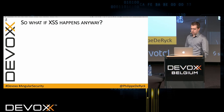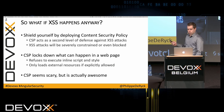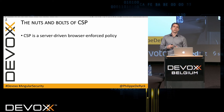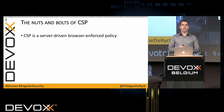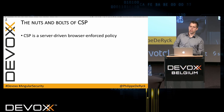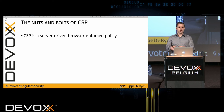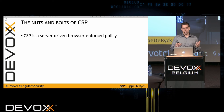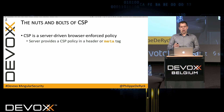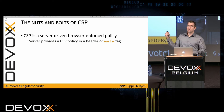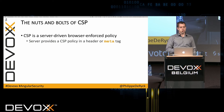A few details about CSP: it's a server-driven, browser-enforced policy — you configure it on your server, send it to the browser, and the browser enforces it on the currently loaded page. CSP is a per-resource policy, so you can specify different policies for different pages. In an Angular application you essentially have one page, so one CSP policy. You can specify it as a header — the default choice — or use a meta tag if you don't control the web server.